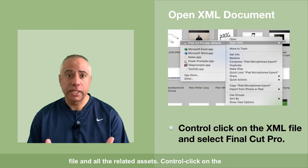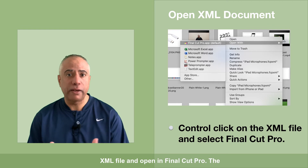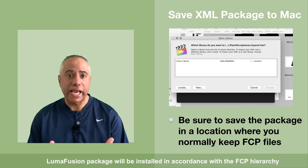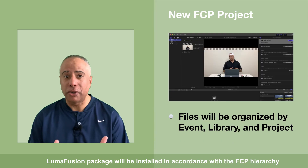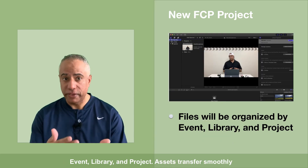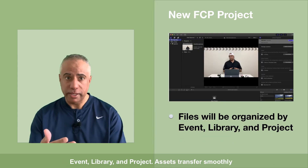Control-click on the XML file and open it in Final Cut Pro. The LumaFusion package will be installed in accordance with the FCP hierarchy: event, library, and project.